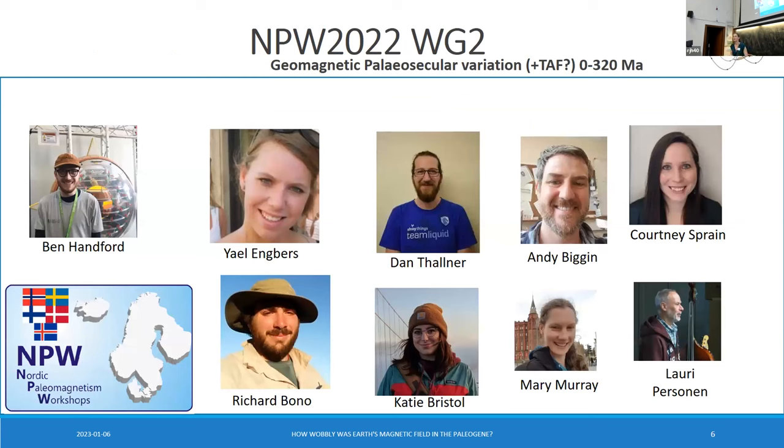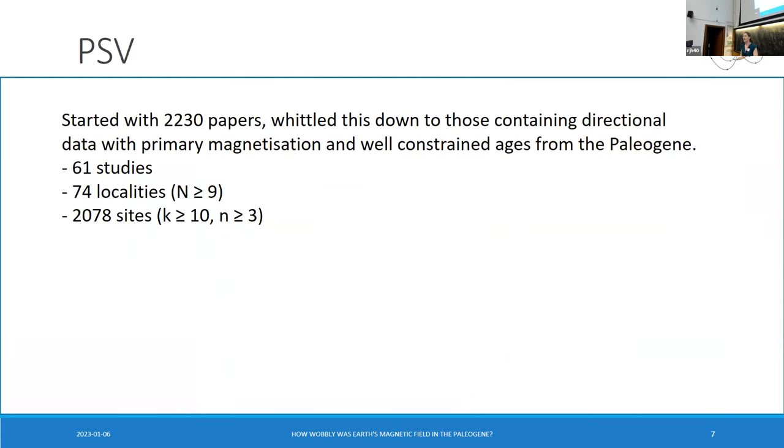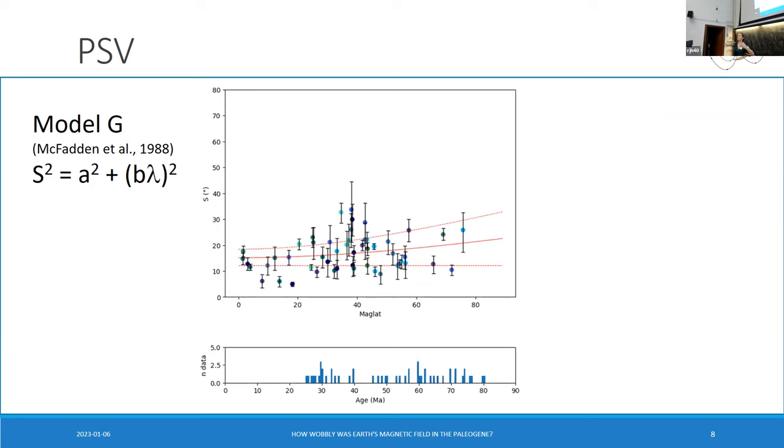So this summer, we had the Nordic Paleomagnetic Workshop. And this team of people did a lot of work, putting together a vast data set of all the directional data over the last hundred million years. So we started with over 2000 papers to sift through and cut most of those out, whittled them down and got down to 61 studies that passed our criteria. So in total, we have 74 localities and over 2000 sites. So we just plot and from those sites, we calculated the paleomagnetic pole dispersion. That's the scatter S. And then we just plot that with latitude over that whole period, which is what we get. We can see the Model G fit on there. So it's quite messy. It's quite a lot of data.